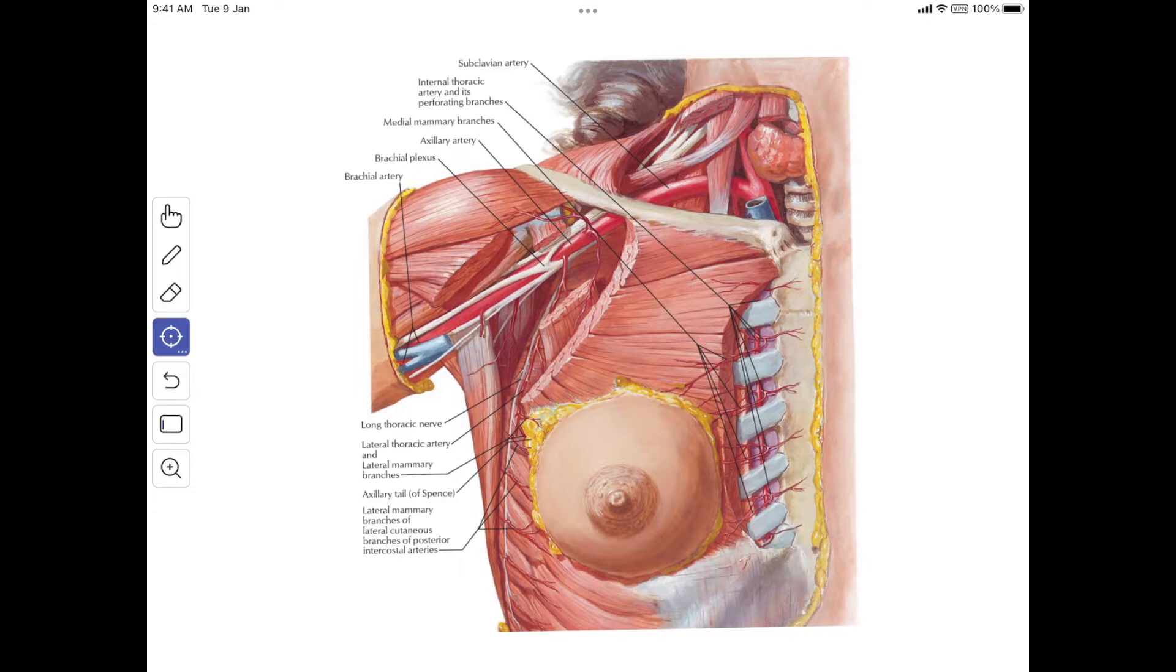The fourth are the lateral branches of the second, third, and fourth intercostal arteries, and they supply the deep surface of the gland.